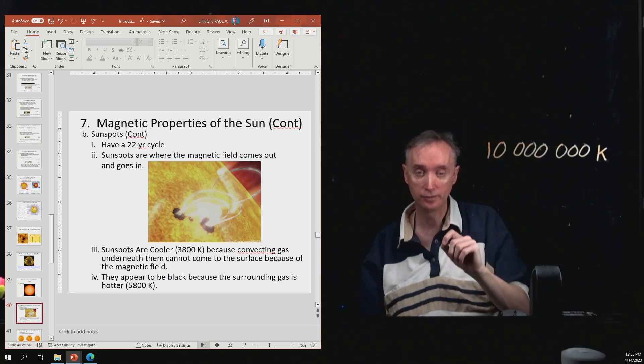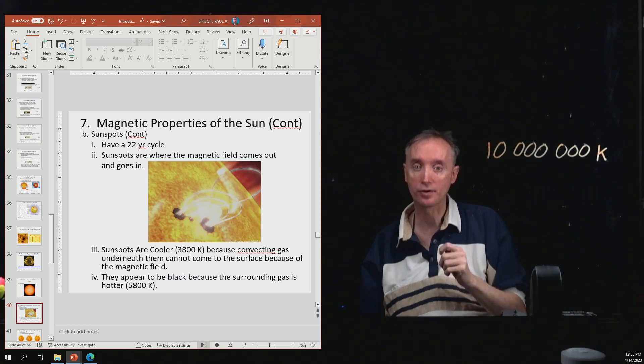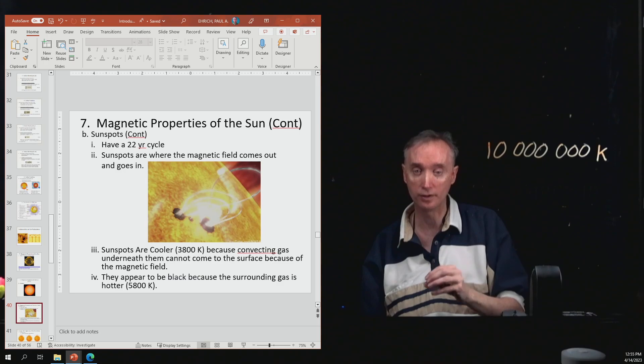Now in actuality, those sunspots are not black. They just appear to be black. They're actually blindingly bright. It's just that everything else, the yellow part is so much hotter than what the black part is. It makes it look black in comparison.